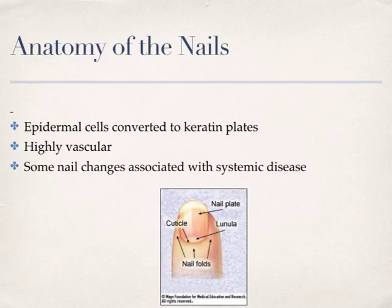Quick anatomy of nails: nails are epidermal cells converted to keratin plates. Nails are very vascular, so injuries like being smashed can cause painful hematomas underneath. Sometimes the pressure becomes so significant that a small release is performed to relieve pressure under the nail. Nail changes, along with hair and skin changes, can go along with systemic disease — there are certain systemic diseases linked with nail changes.